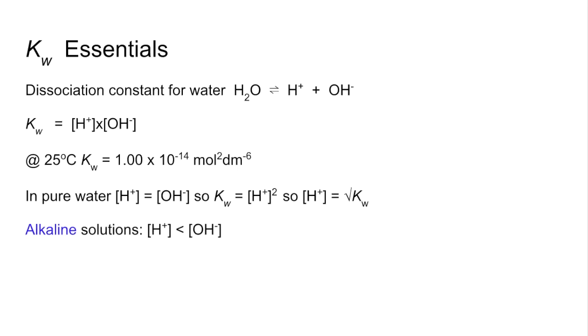Alkaline solutions have an H-plus concentration less than the hydroxide ion concentration. Acidic solutions are the other way around. And for neutral solutions, the hydrogen ion concentration is the same as the hydroxide ion concentration.